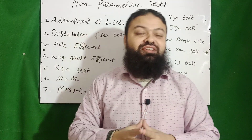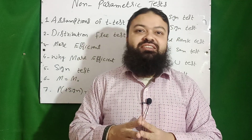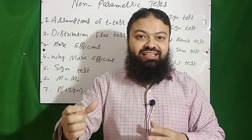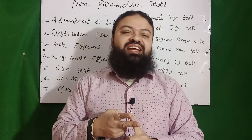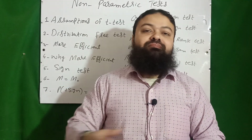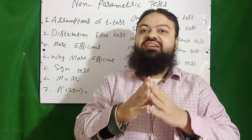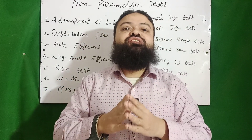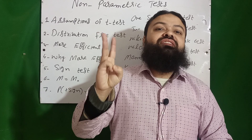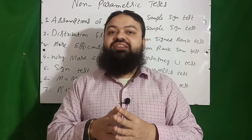First of all, I will tell you the assumptions of the t-test, which is a parametric test. Number one: the sample chosen from the population should be random. Number two: the population from which we have chosen the sample should be normal. Number three: if we have two samples, they should be chosen randomly, the populations should be normal, and with unknown equal variances. These are the three assumptions of the parametric t-test.